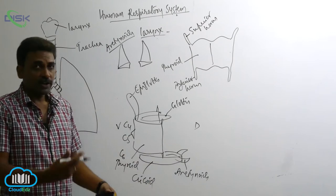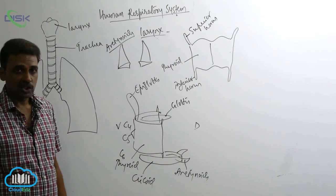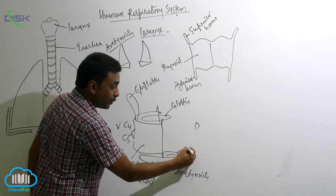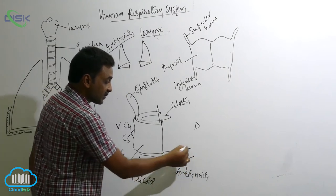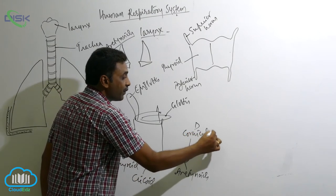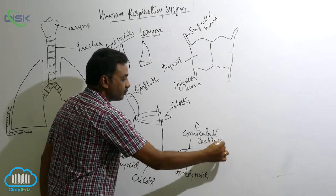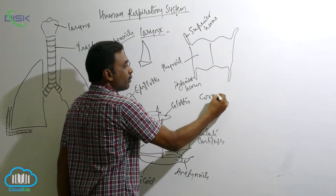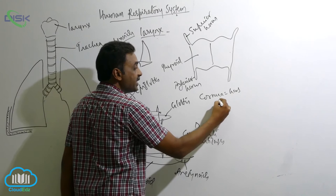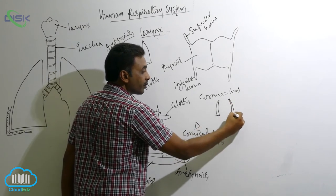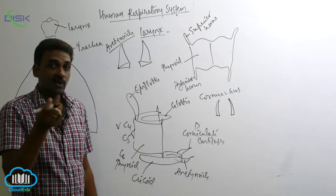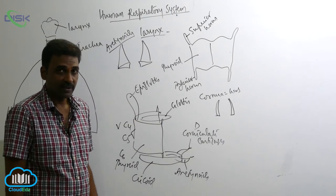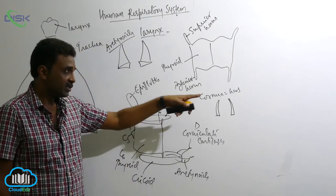Attached to the tip of the arytenoids, you will see the corniculate cartilages. Cornua means horns, so they are horn-like in shape. The corniculate cartilages are made up of elastic cartilage and are present at the tip of the arytenoids.